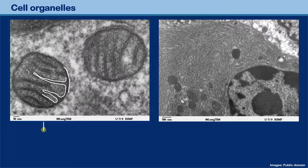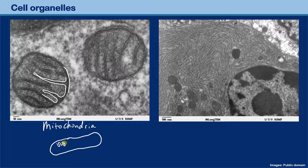These are mitochondria. In drawings, I've always drawn them as bean-shaped structures with infoldings — you probably already have this in your notebook. But you might be wondering: why did I draw a bean-shaped structure, when in reality, under the electron micrograph, it looks so round? Is the drawing wrong? What's going on?